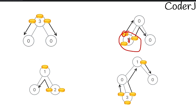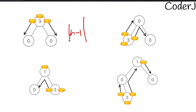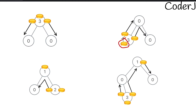We can formulate a pattern: the number of steps a leaf node requires so that it has exactly one coin is always equal to |n - 1|, where n is the number of coins it has. For zero coins: |0 - 1| = 1, meaning one move is needed. For three coins: |3 - 1| = 2, meaning two moves are needed. That is the formula for a leaf node.